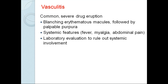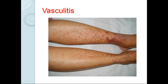Next, vasculitis — a common severe drug eruption. There are blanching erythematous macules followed by palpable purpuric lesions. Systemic features like fever, myalgia, and abdominal pain will also be present. Laboratory evaluation to rule out systemic involvement is very important whenever you see a vasculitis case — a thorough workup must be done because sometimes there may be systemic involvement also.